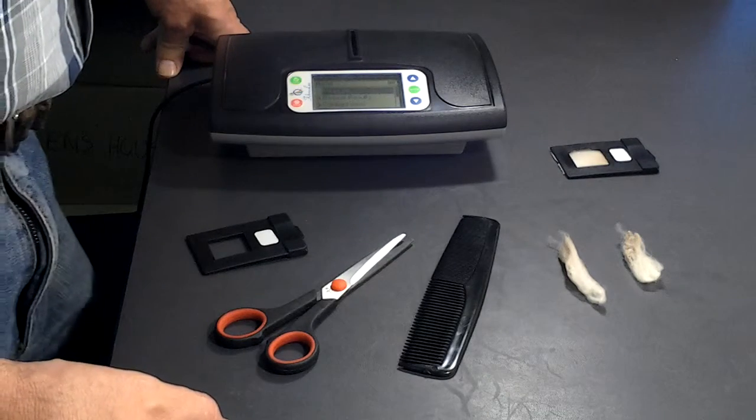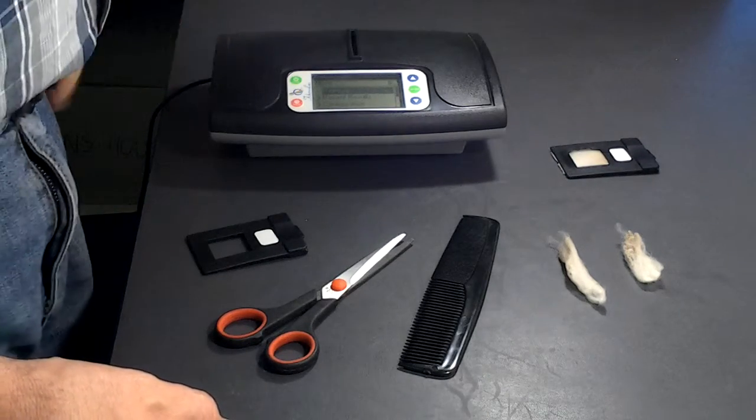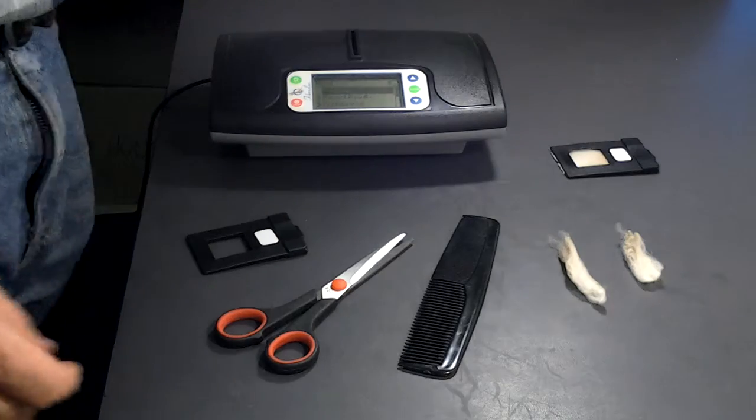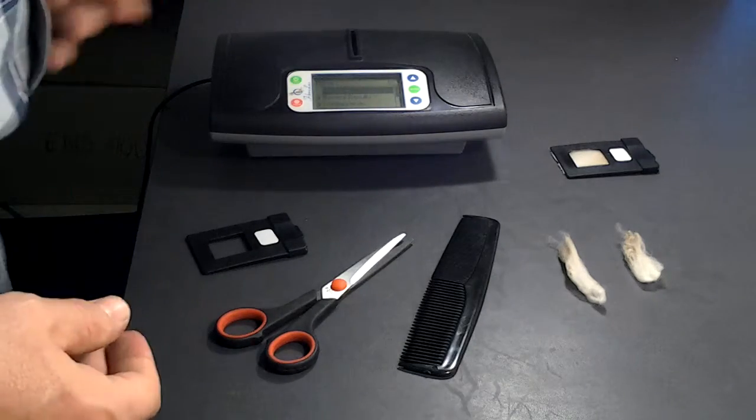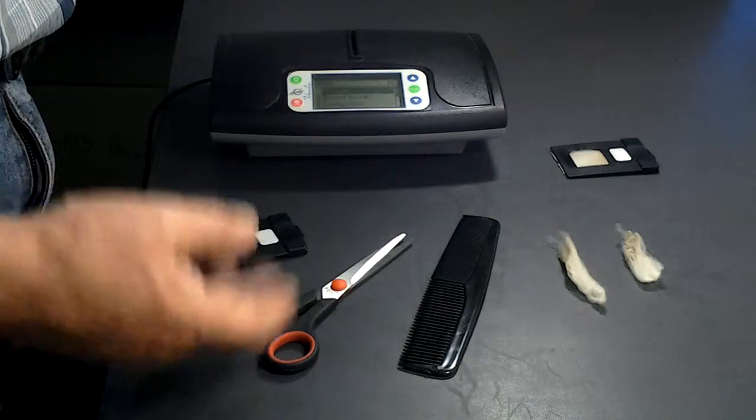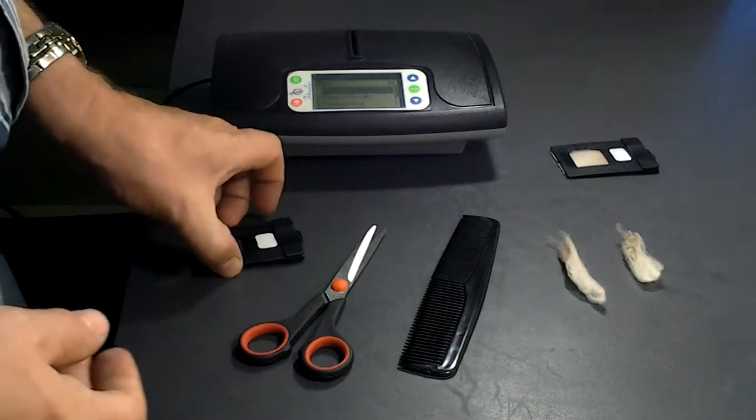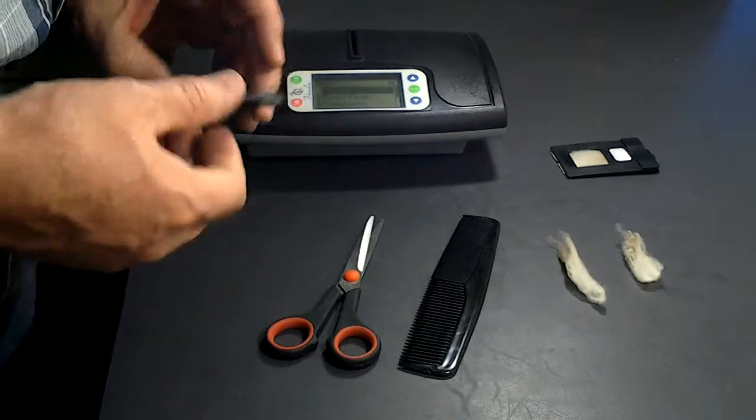An important part of taking measurements with your 5LX micrometer is sample preparation. And for that you would need a comb, scissors, and one of the sample holders provided with your meter.